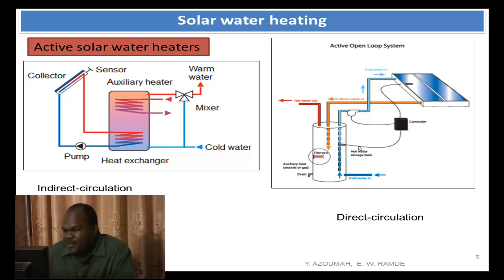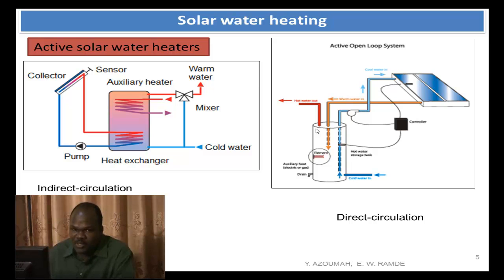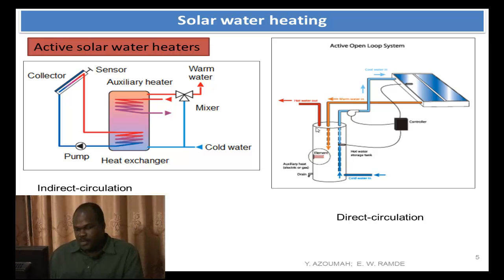On the right picture, you have the direct circulation, where cold water comes in and mixes up with the warm water in the water tank. It's being pumped into the collector, picks up the heat, and comes back. Remember that all the blue lines are cold water and the red lines are warm water.